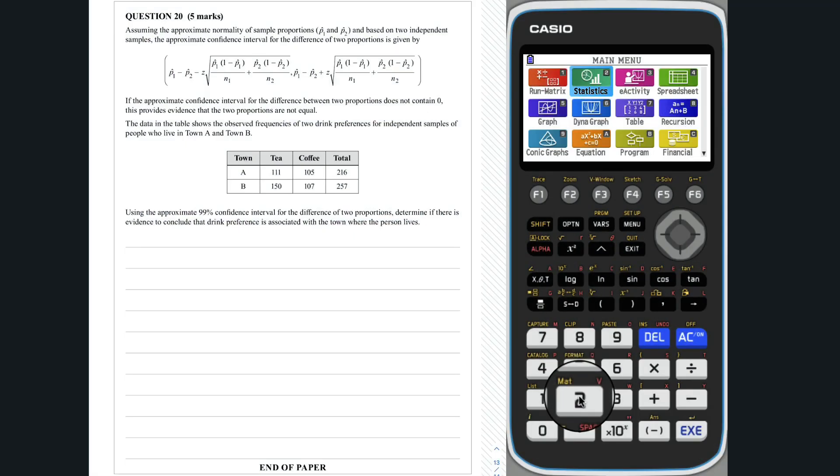Question 20. We are given two independent samples and asked to calculate a 99% confidence interval for the difference of two proportions and to determine whether or not drink preference is associated with the town people live in. The two proportions we want to compare are either the proportion of tea drinkers in town A compared to town B. We will choose tea. Let P1 equal the proportion of town A who prefer tea. Let P2 equal the proportion of town B who prefer tea.